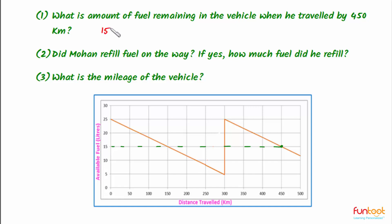The amount of fuel left is 15 liters, so the answer for the first part is 15 liters. For the second part, we have to find if there is any refill on the way. From the graph, we can see the fuel is constantly decreasing, but at one point there is a sudden increase in the amount of fuel. This is definitely due to refilling.